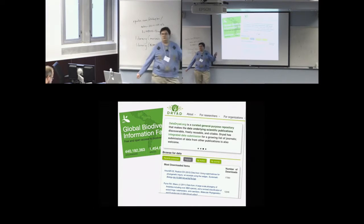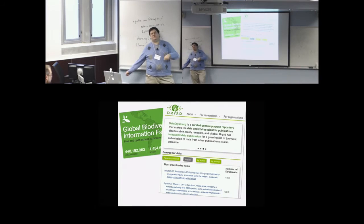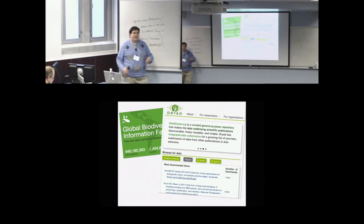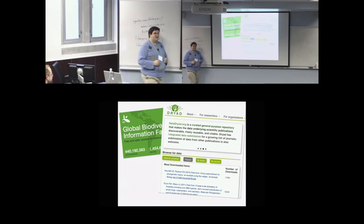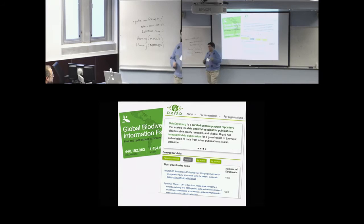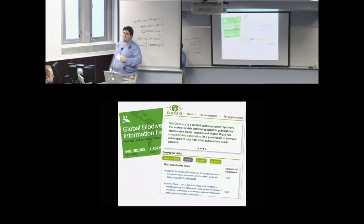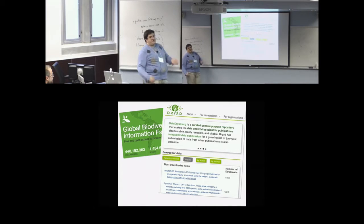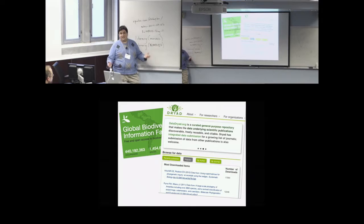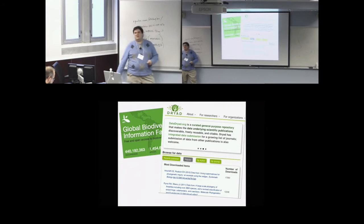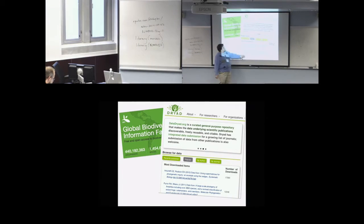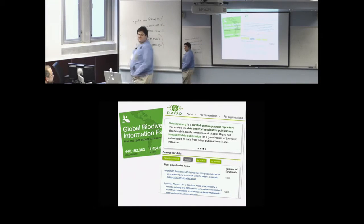Dryad: journals are requiring data deposition. Why did TreeBase fail? Because people are busy. With Dryad, if you submit to Systematic Biology, you will put things on Dryad or you won't get published. There are carrots too — if you publish your data you get more citations, your work is more useful. There are R interfaces to download all this data. One paper had 17,000 downloads just for the data alone. It's good to be in coding.